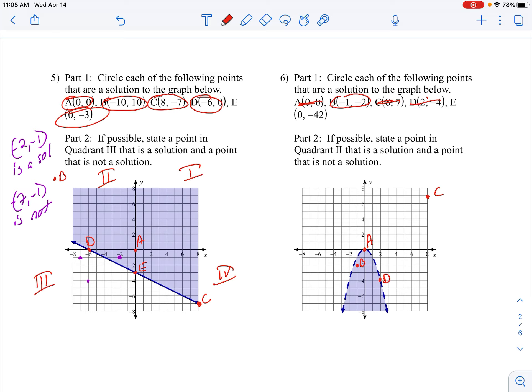0, negative 42 is way down here. It's still going to be in my shaded region, so E is a solution. B and E. Go find quadrant 2. Quadrant 1, quadrant 2, quadrant 3, and quadrant 4. In quadrant 2, there is no solution. No solutions because there is no shaded region in quadrant 2.